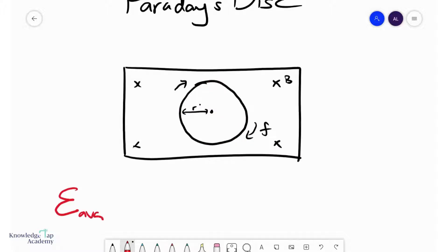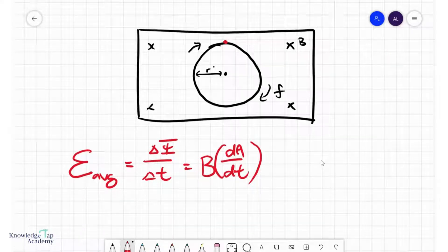you can think of the average EMF induced over here as the delta phi delta t, which is simply B dA dt. Again, n is 1, cosine theta is 1 because you're perpendicular to the field.